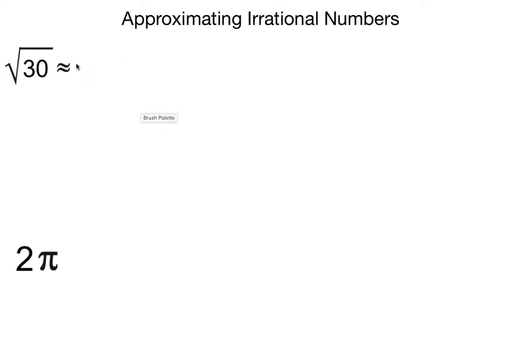Because 30 is not a perfect square it's an irrational number. Our goal is to try to find about what number is the best approximation of the square root of 30.